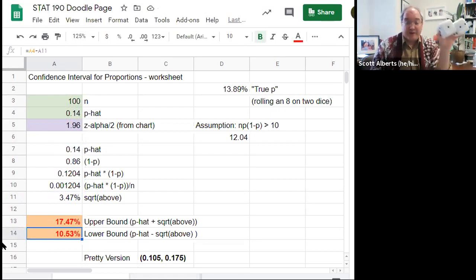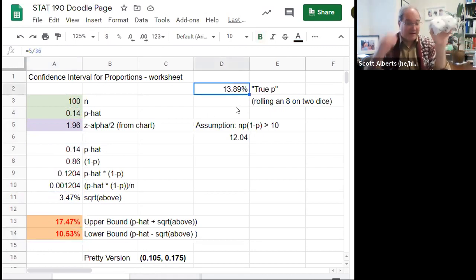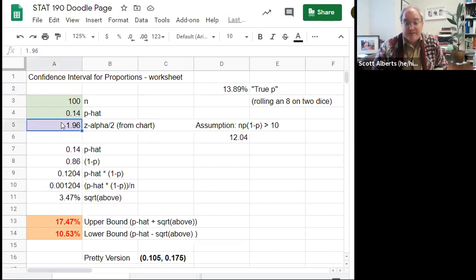That's going to give us a lower and upper bound from 10 and a half percent to 17 and a half percent. Three and a half percent is our margin of error plus or minus that from our value. So what that says is based on the data we collected with StatCrunch rolling the dice 100 times, we think that the real probability is going to be somewhere between 10 and a half percent and 17 and a half percent. Now, in our case, we actually know what the true percent is because we calculated that back in chapter five.